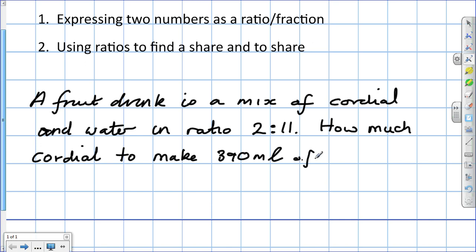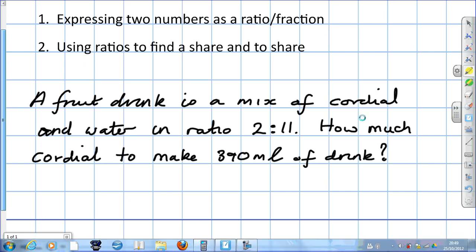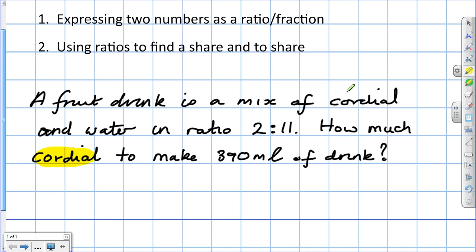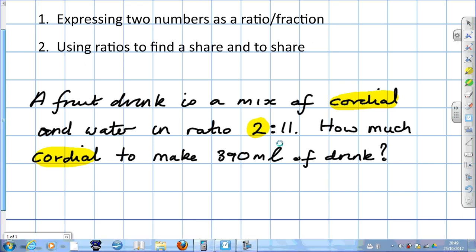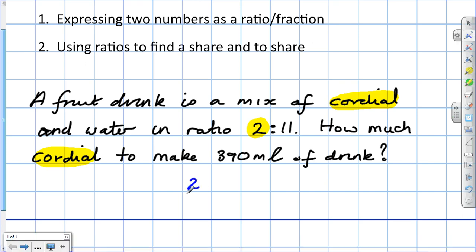What is it we're trying to find? We're trying to find the cordial. The cordial was the first thing mentioned and therefore it must be the first number in the ratio. So it's the first thing we write down. But here we know the total amount. So we have to use the total number of shares. So it's going to be 2 added to 11, 13. So it's going to be 2 over 13 times the 390.